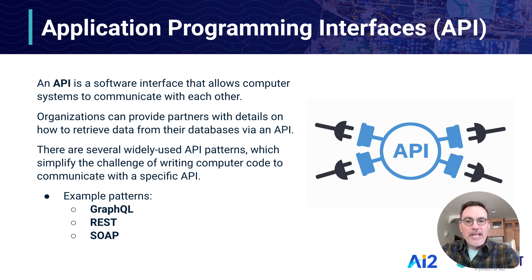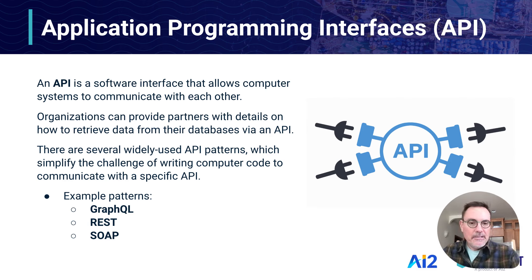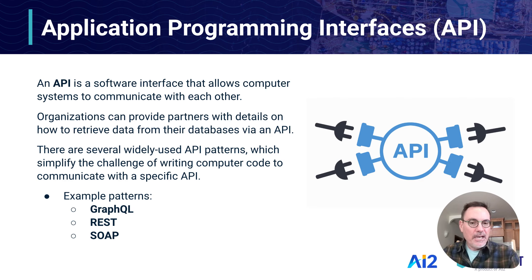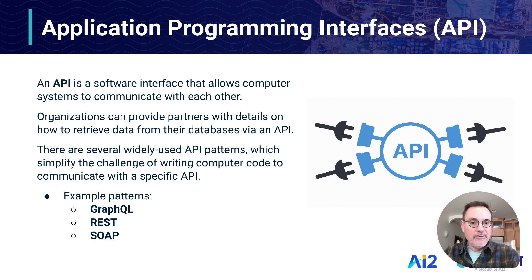There are several different API patterns that have developed over the years, because APIs are not something new — they've been around for many, many years, really since the beginning of the Internet. Some common patterns you might have heard of are GraphQL, REST, and SOAP. REST, or Representational State Transfer, is probably one of the most widely used and has been around for many years. It's a very simple pattern, and almost any web developer who has worked with APIs is probably familiar with REST. There are also more sophisticated patterns that have developed in recent years, and GraphQL is one of those — and it happens to be the pattern used by the Skylight API.